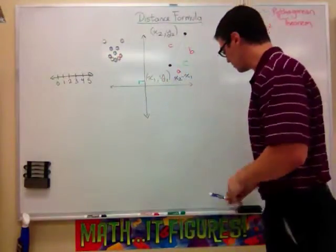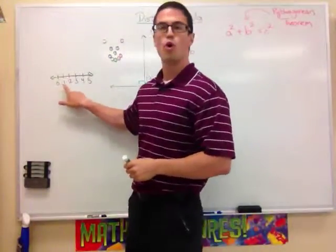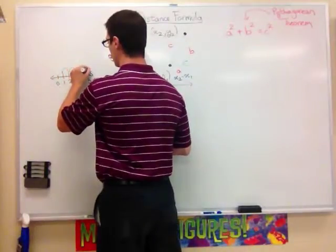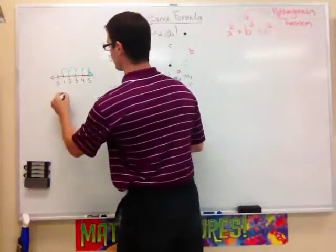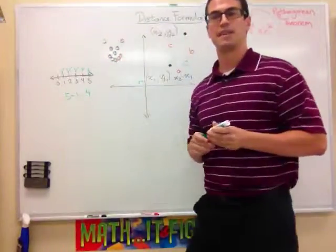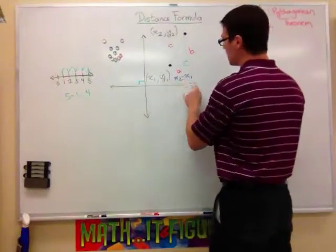And the reason this works, you can think of a number line. Say you were going from 1 to 5. Well, you can count 1, 2, 3, 4 over. Or, you can simply do 5 minus 1 equals 4. And you get the same answer. So, that explains why I'm doing x2 minus x1.